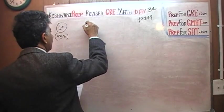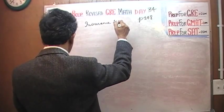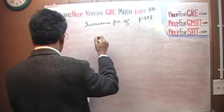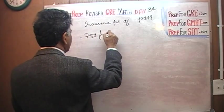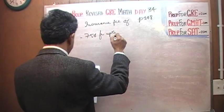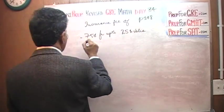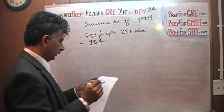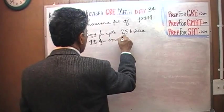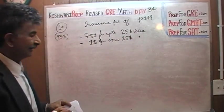Here is the problem. We are told that we have an insurance fee of 75 cents for up to $25 value. And we are also told that the insurance fee is $1 for anything over $25 value.